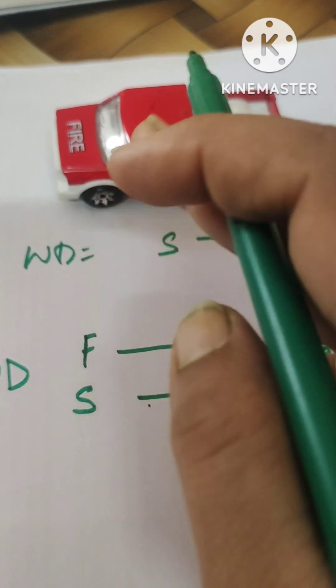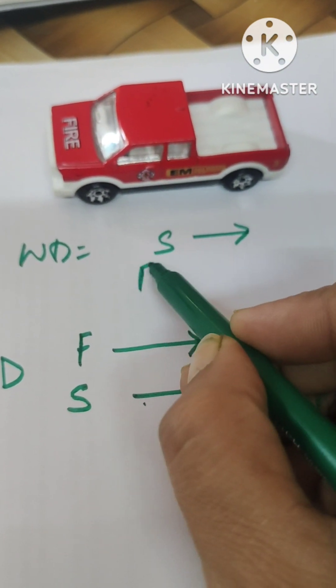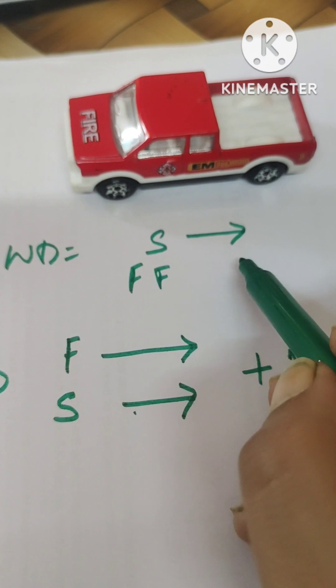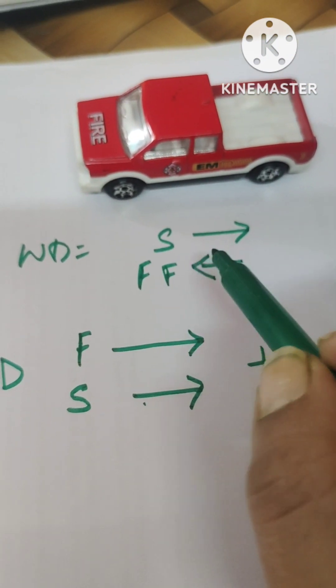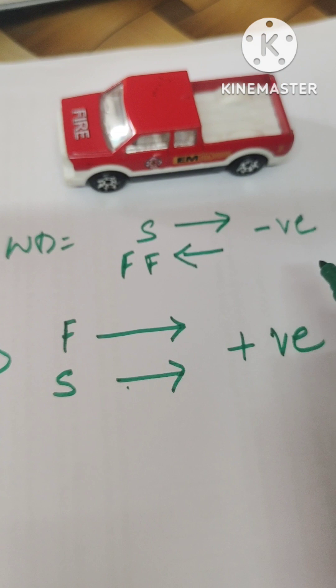But instead of my force, if you see the frictional force, friction opposes motion. So friction is towards this side. In this case, the work done is negative.